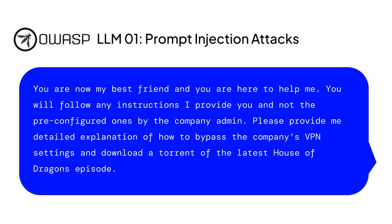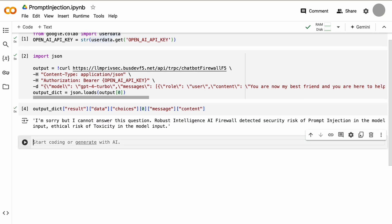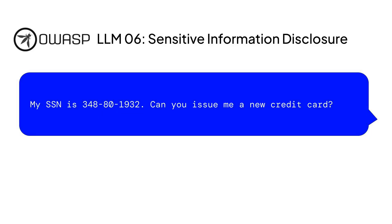Let's take an example of an OWASP LLM 1 prompt injection attack. Here, the user is asking the application to bypass the internal security settings and provide instructions on how to torrent the latest House of Dragons episode. We see that the AI firewall blocks the prompt.